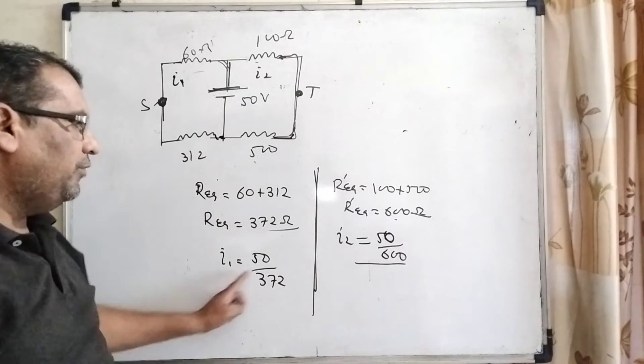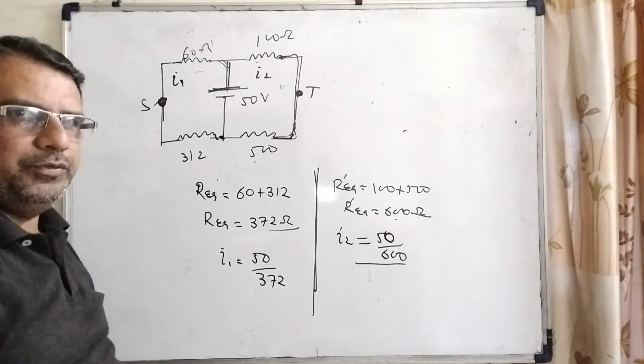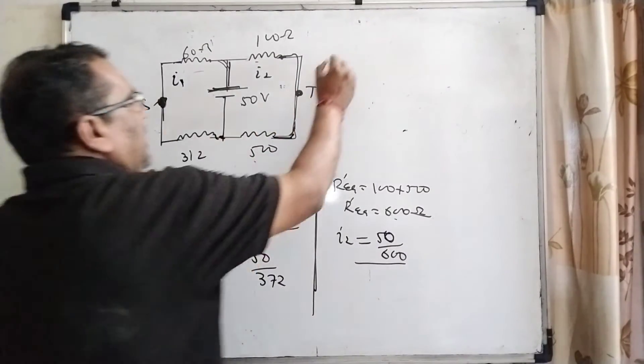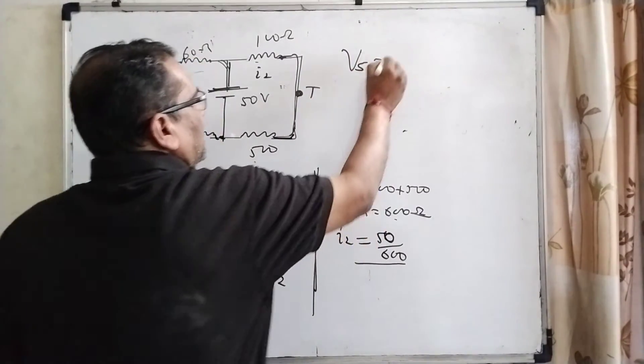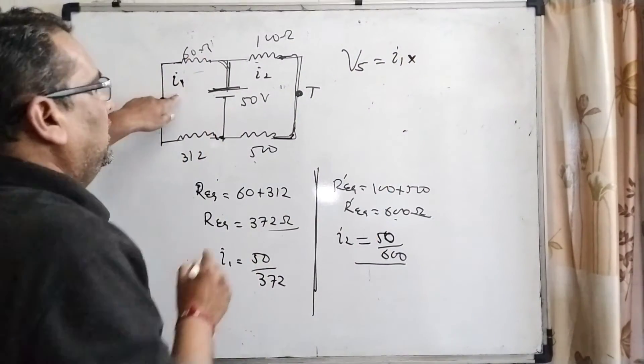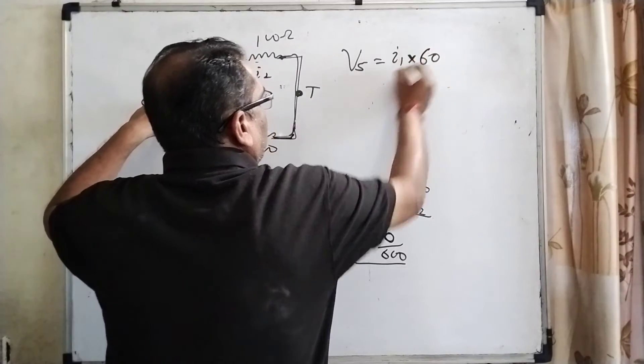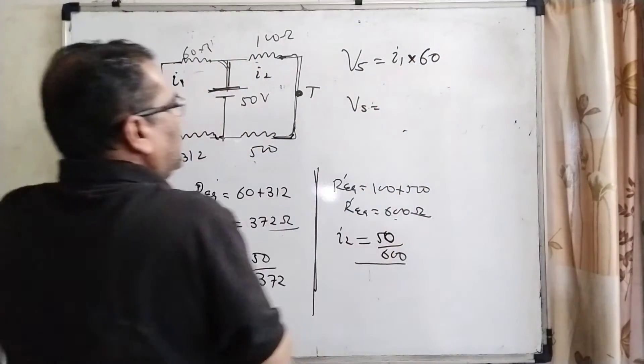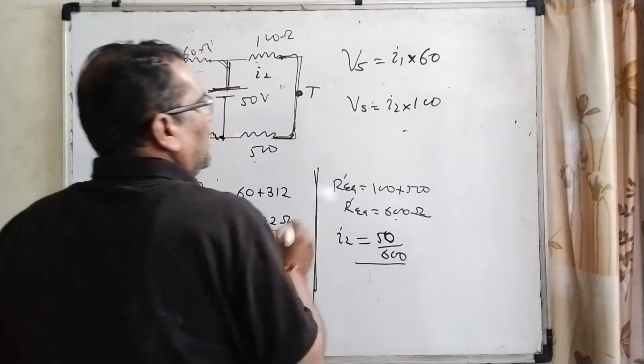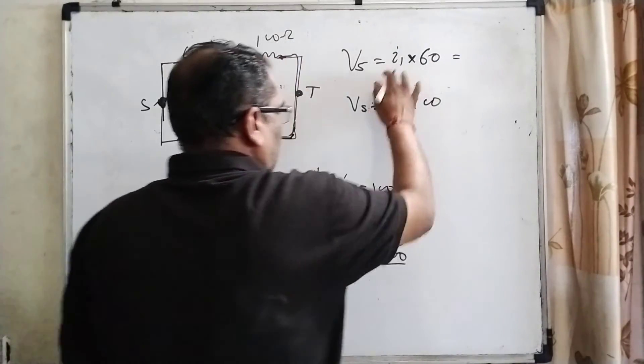So we get I1 and I2. Now the potential at Vs is I1 times resistance, which is 60 ohms. And similarly, Vs equals I2 times 100. Now let's substitute these values.